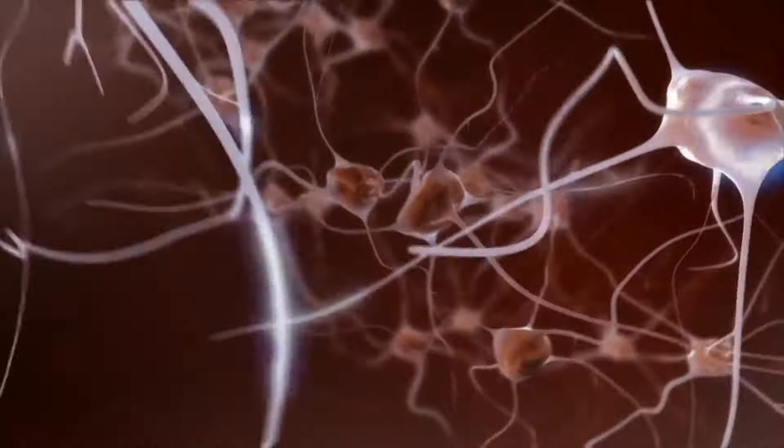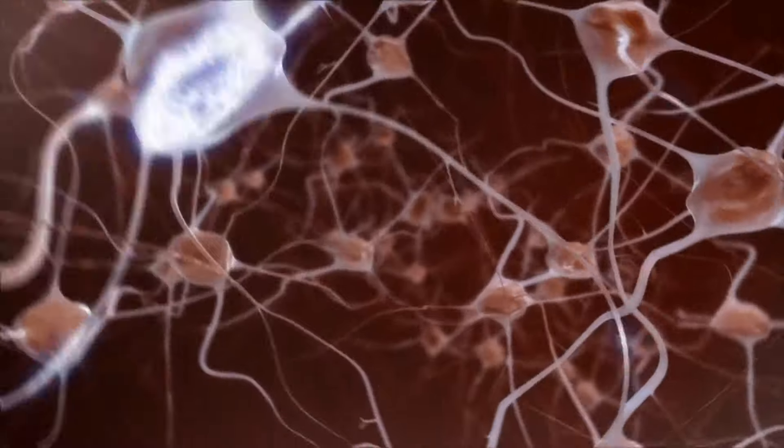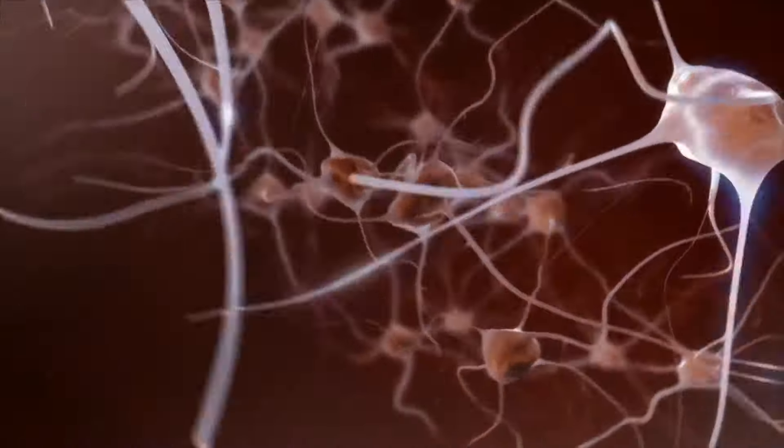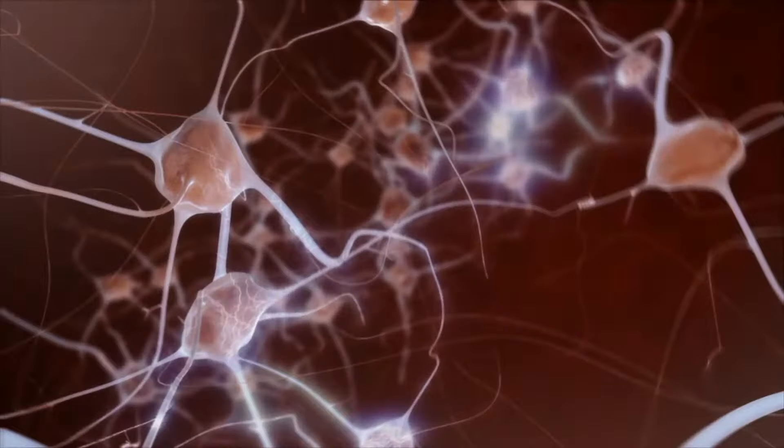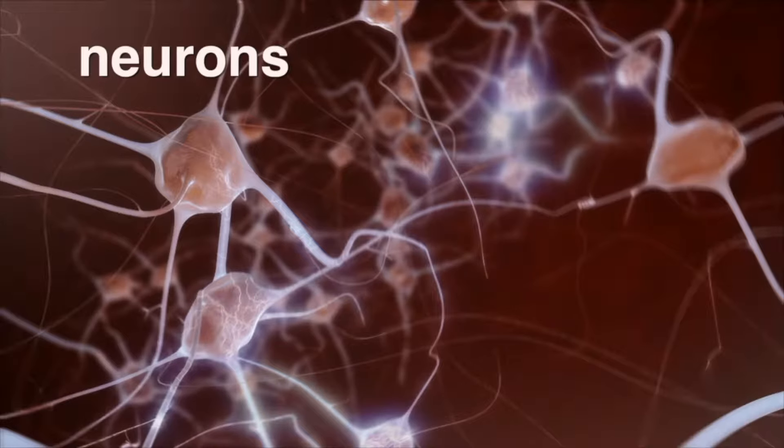As your body receives information about what is happening, your nervous system directs the way your body will respond. Your nervous system is pretty amazing and very complex. Messages are constantly being transferred throughout your body in the form of fast-moving electrical energy. This energy comes from specialized cells called neurons.